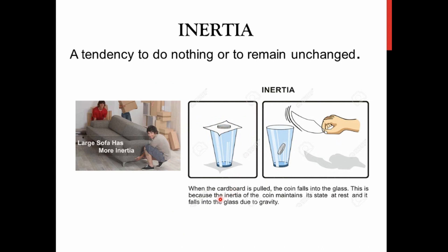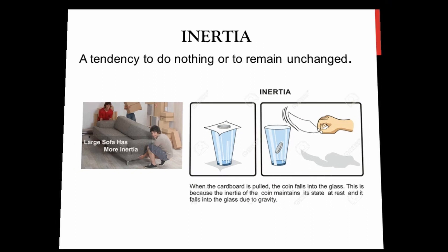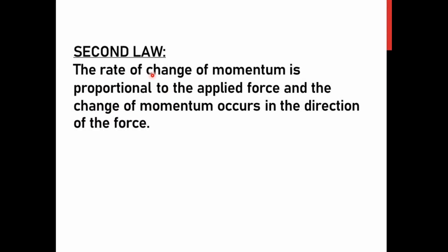Another example: a glass, a cardboard, and a coin. When the cardboard is pulled, the coin falls into the glass. This is because the inertia of the coin maintains its state of rest — the coin does not move with the cardboard when it is pulled away. Of course the coin then falls due to gravity. That is inertia. You must understand and memorize this law very carefully.